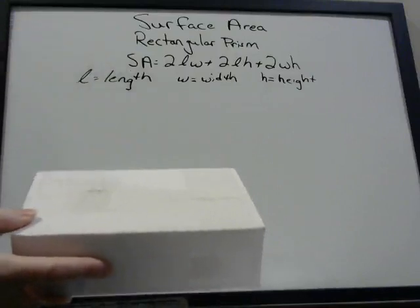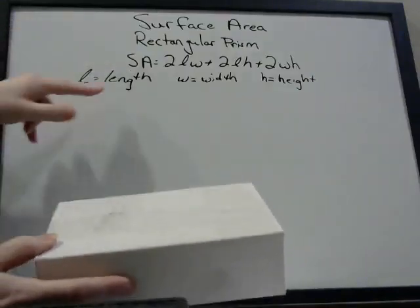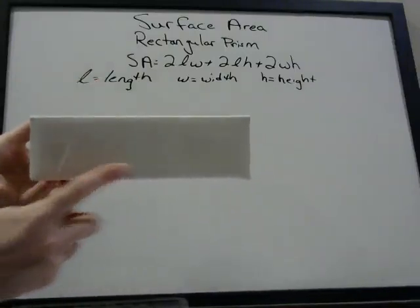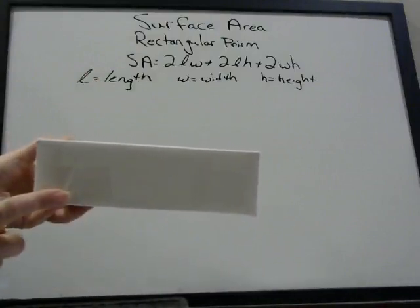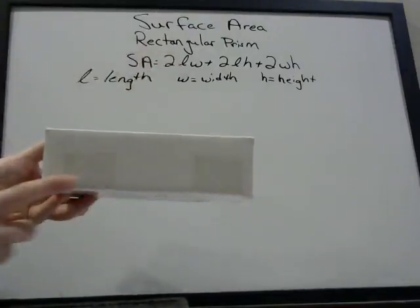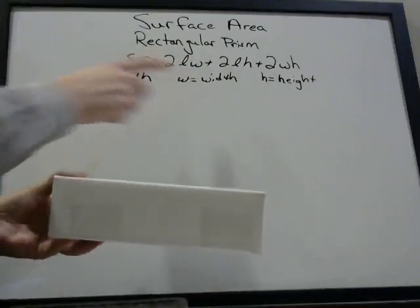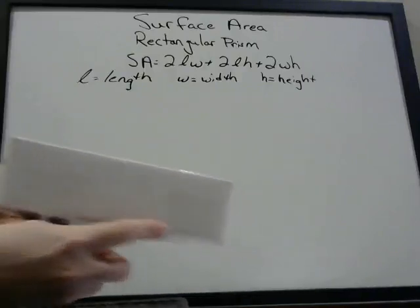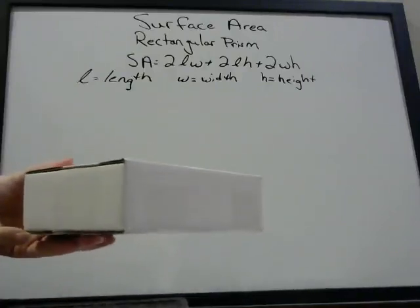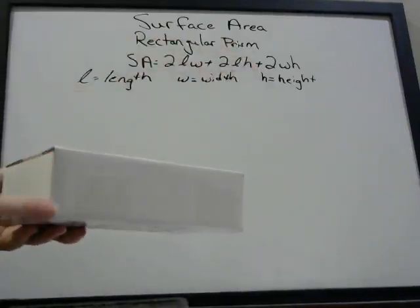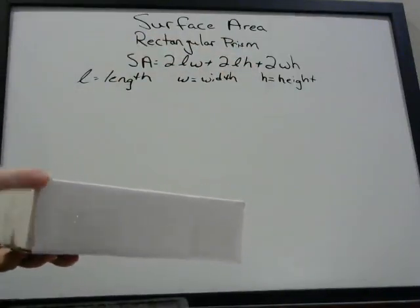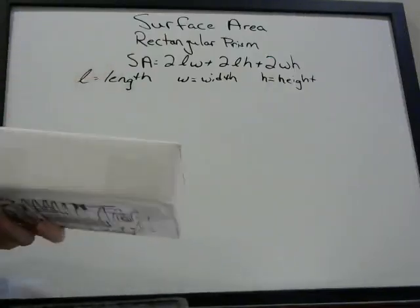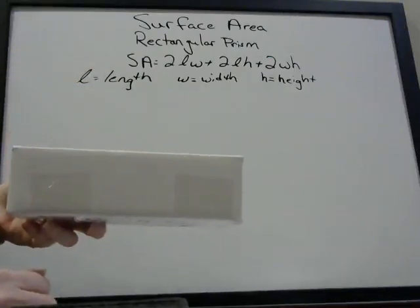That's what you're doing in this formula. When we say the length, if you think about your box facing you this way, this is usually called the length — that's what that means in this formula. The width is going to be the length of this other side. The height is going to be how tall it is. And so this formula is going to outline each face and take the area of it.